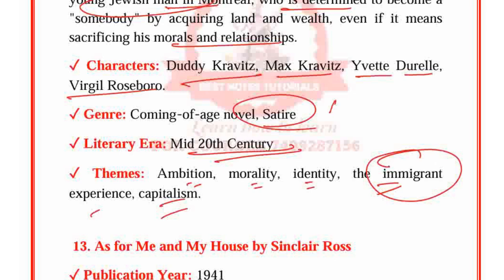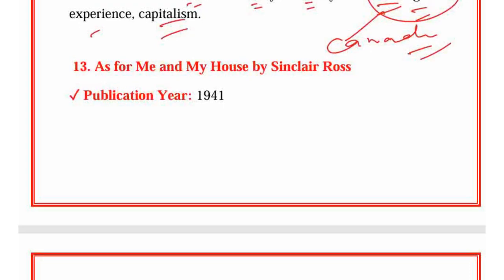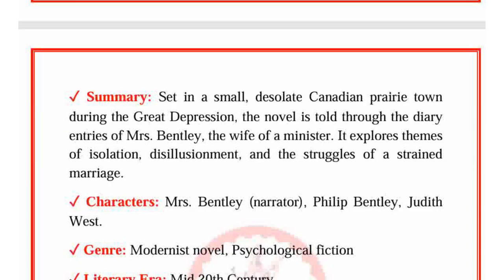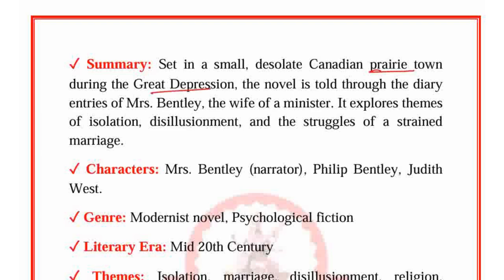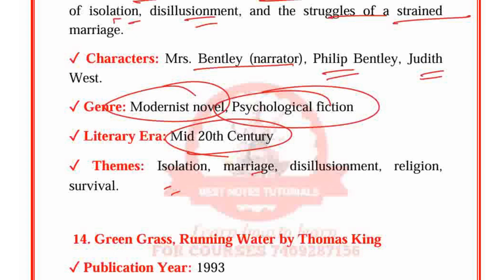As for Me and My House by Sinclair Ross, published in 1941. Set in a small, desolate Canadian prairie town during the Great Depression, the novel is told through the diary entries of Mrs. Bentley, the wife of a minister. It explores themes of isolation, disillusionment and the struggles of a strained marriage. Characters: Mrs. Bentley (narrator), Philip Bentley and Judith West. Genre: Modernist novel, Psychological fiction. Period: 20th century. Themes: Isolation, Marriage, Disillusionment, Religion and Survival.